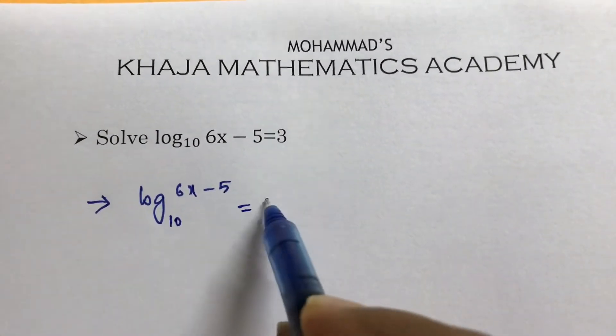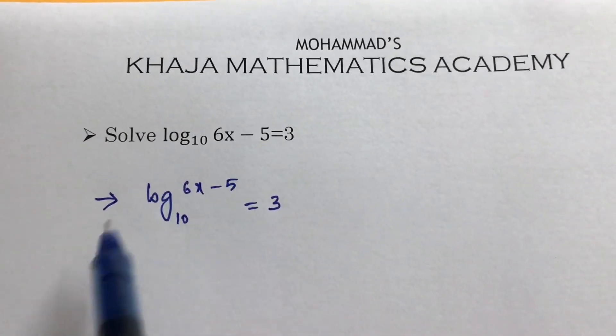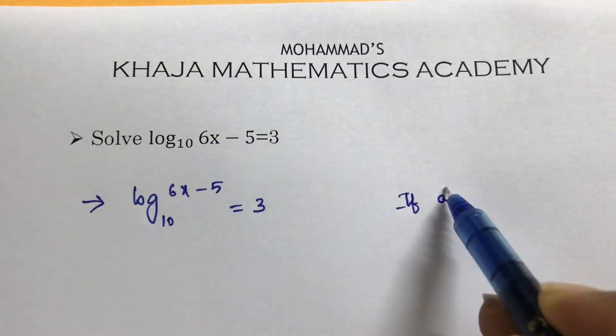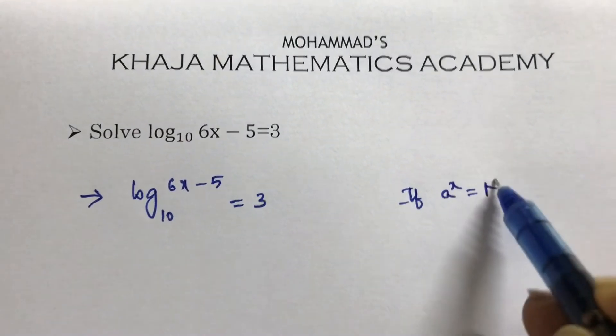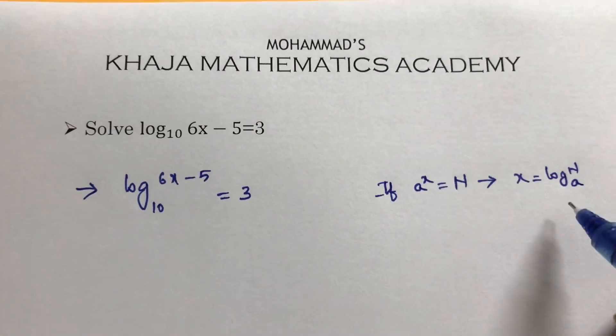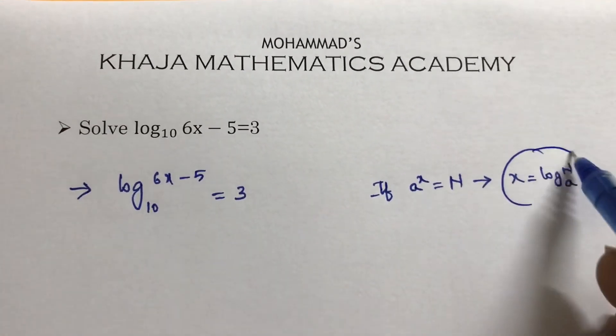Log₁₀(6x - 5) = 3. It is in logarithmic form, so according to the definition of logarithm: if aˣ = n, then x = logₐ n. This is logarithmic form.